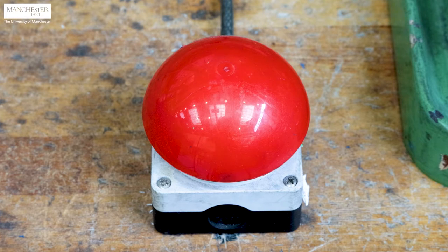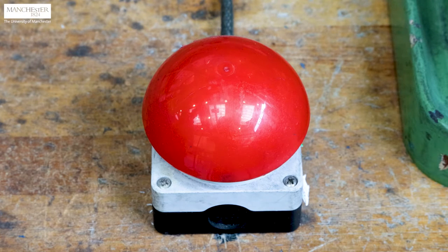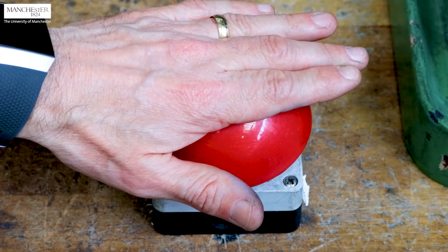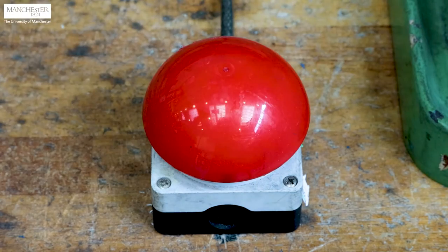Here we show you how e-stop operates. When you feel any danger with the machine or environment, you just press the button firmly as shown. This will immediately cut the power to the machine.